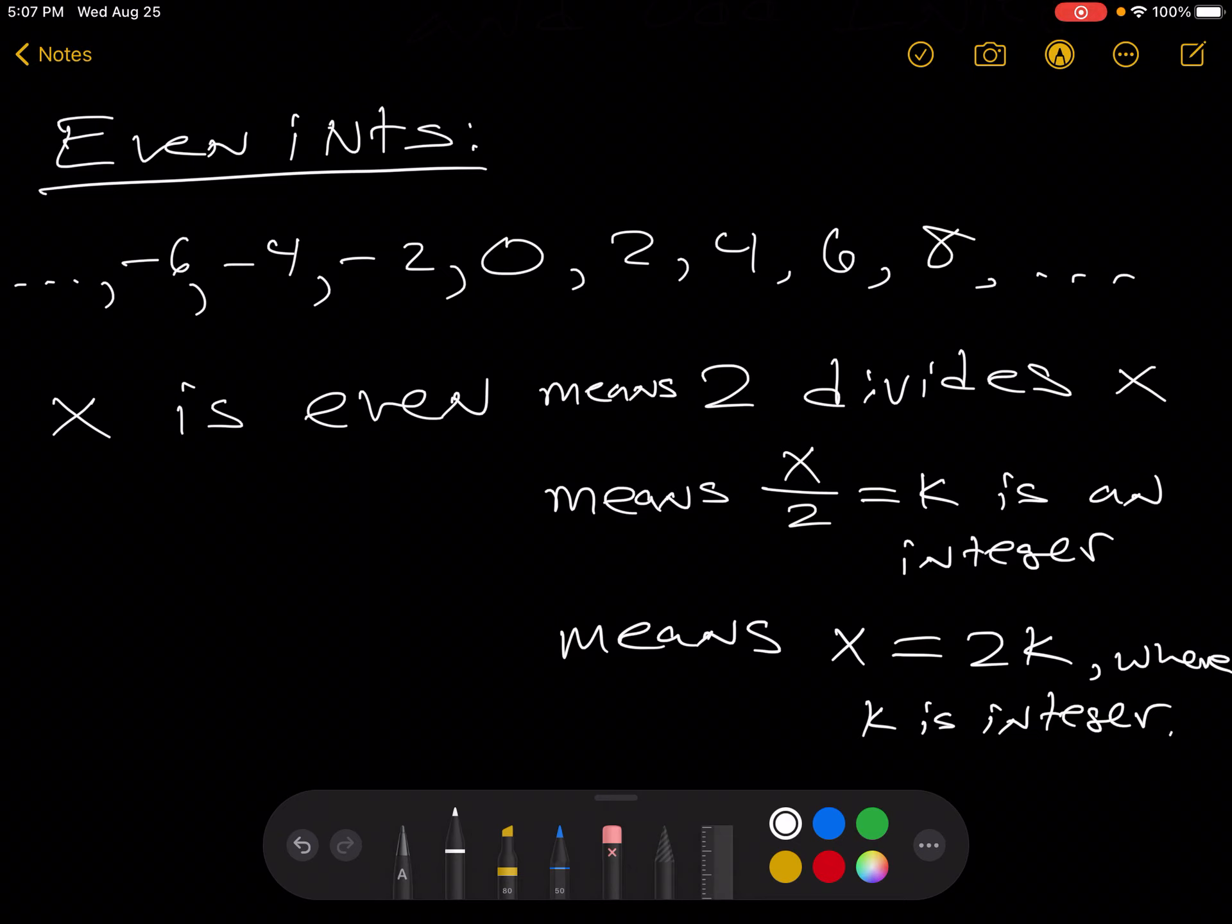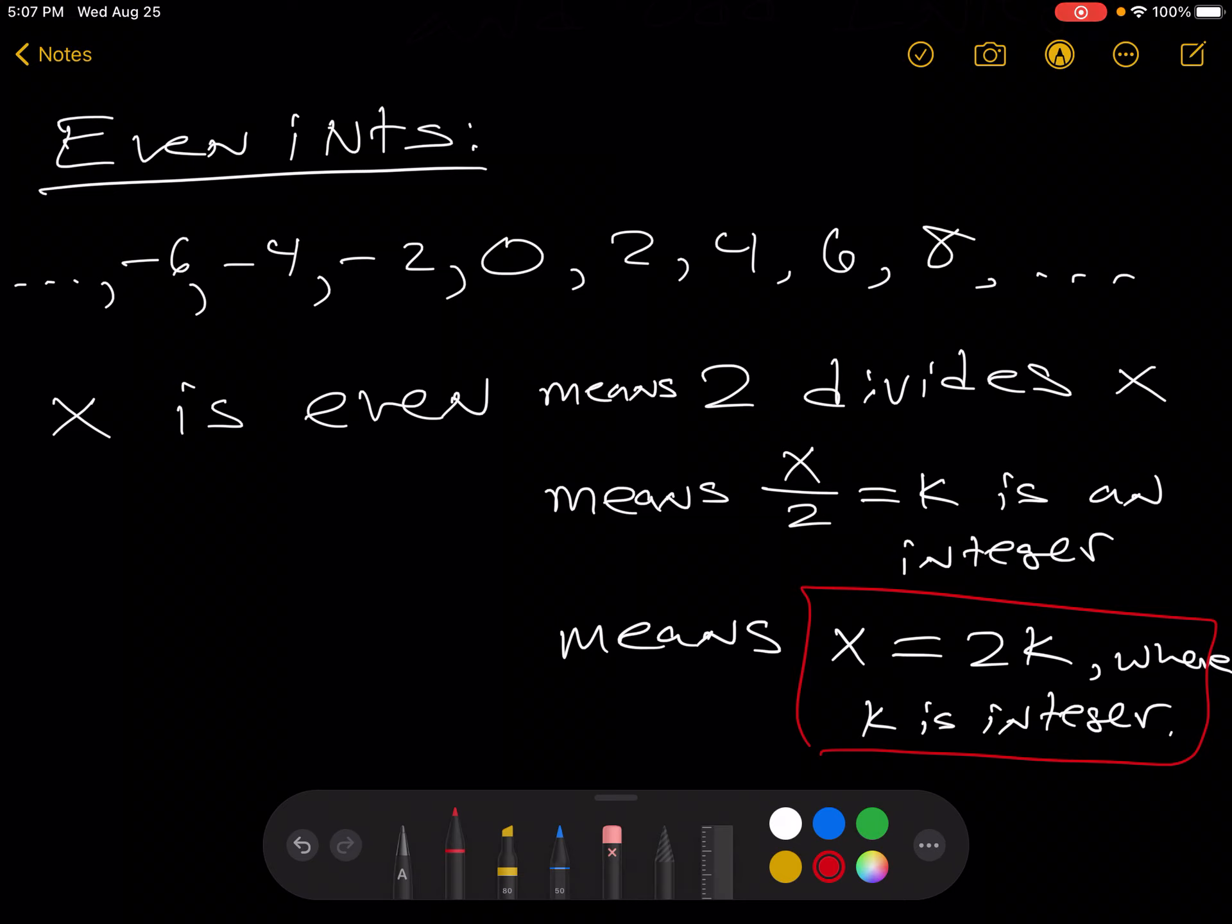And you'll see, this is exactly the definition that's given in the Zybook. In the Zybook, x is even means the same thing as x equals 2k, where k is an integer. So now we've defined the even integers.